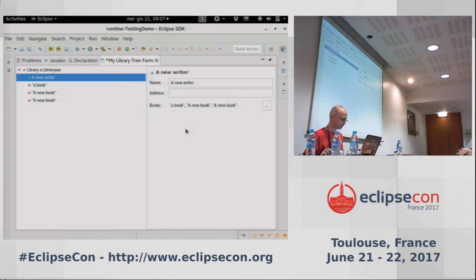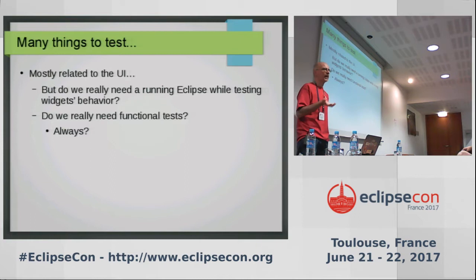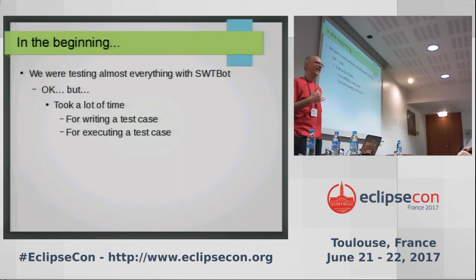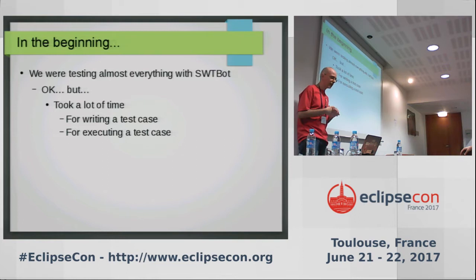When developing Parsley, we have to test many things. Most of the things we have to test are somehow related to the UI, to JFace controls, to SWT controls, or to Eclipse elements. But do we really need a running Eclipse instance to test most of these things? Do we really need functional testing frameworks? At the beginning, when we started implementing Parsley, we were testing almost everything with SWTBot — a functional testing framework. That was okay because we were able to test all the behavior, but it took us a lot of time both for writing a single test and most of all for executing tests.